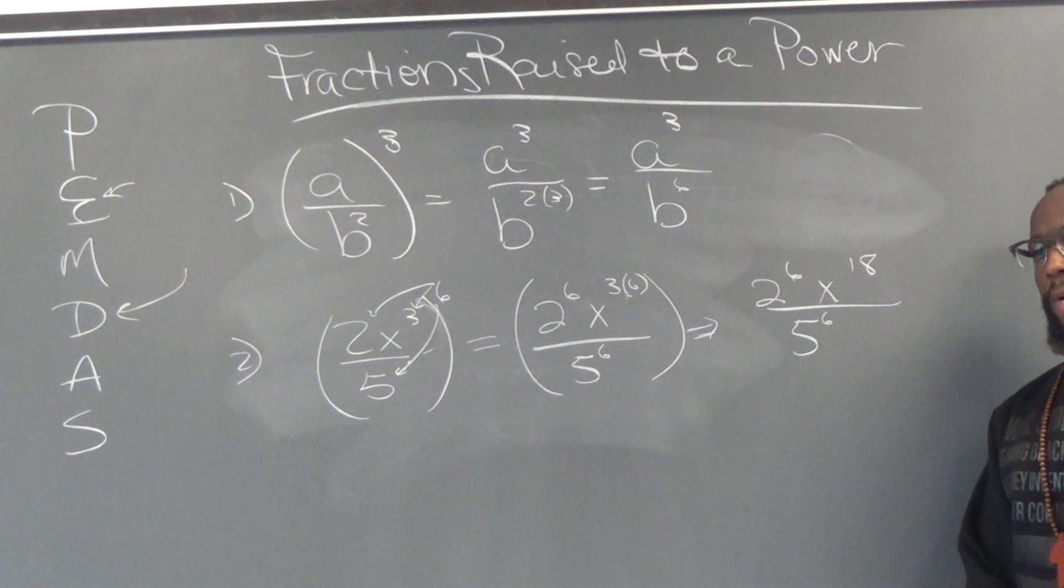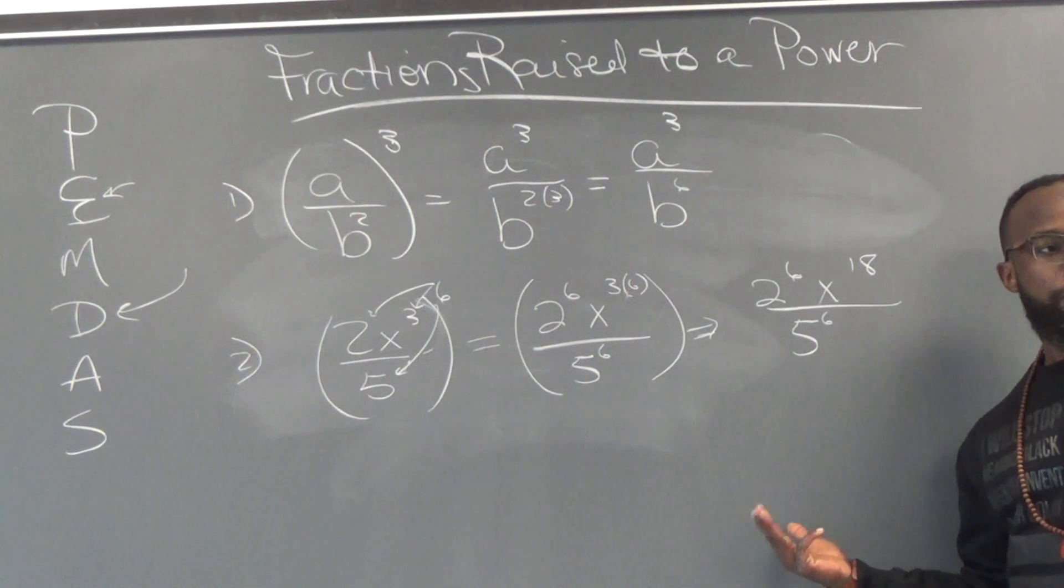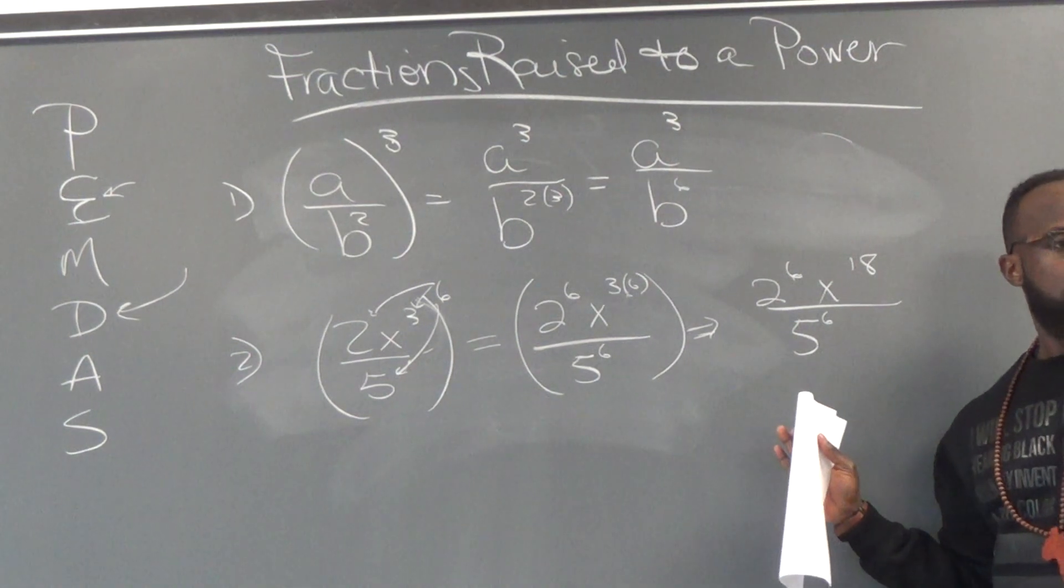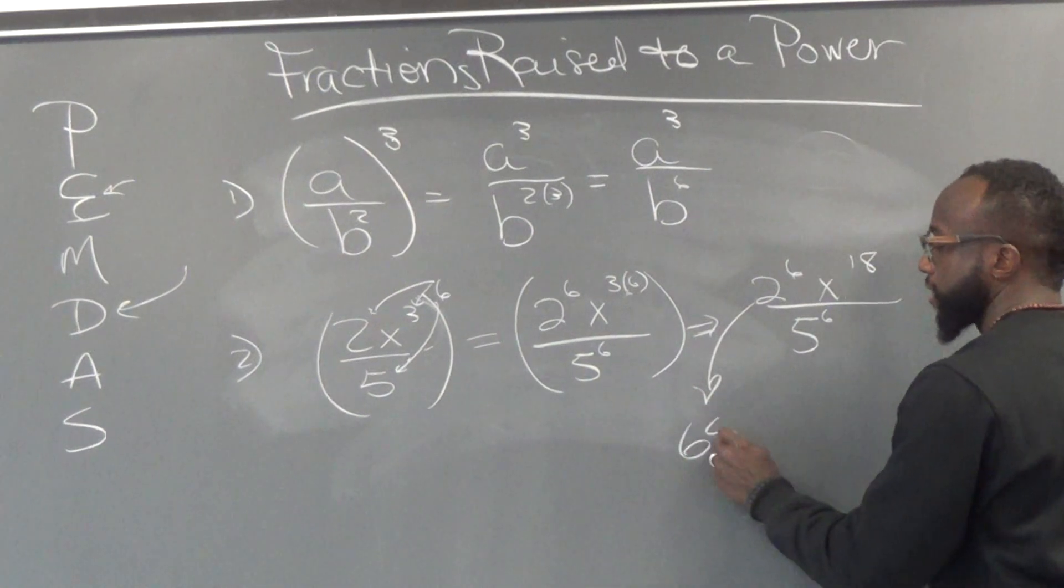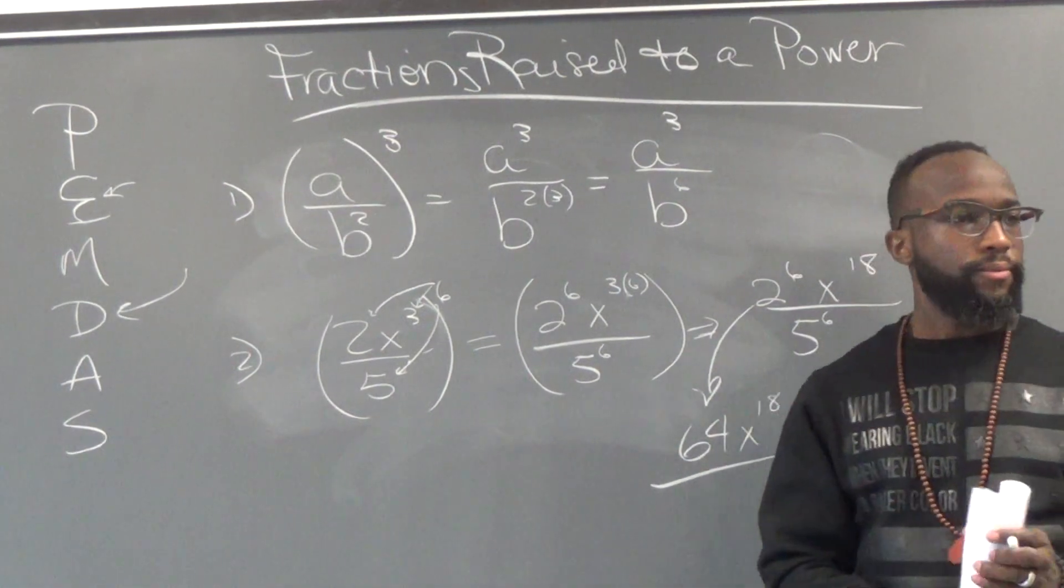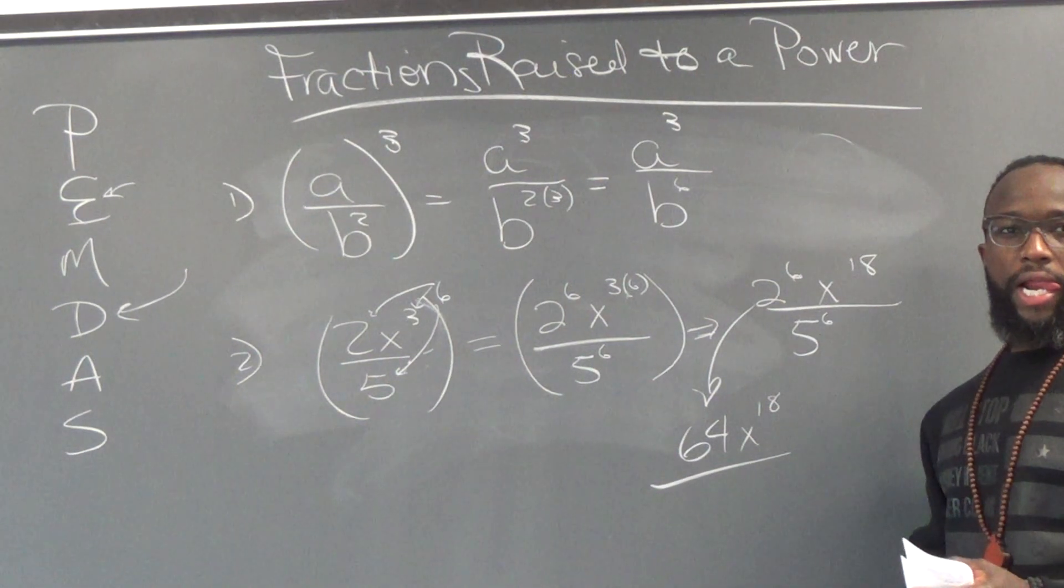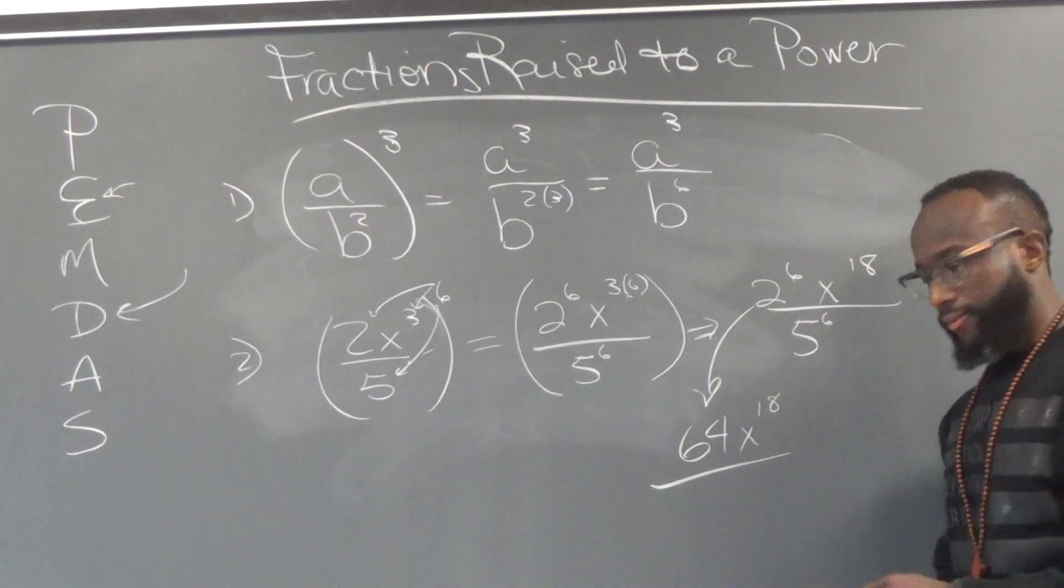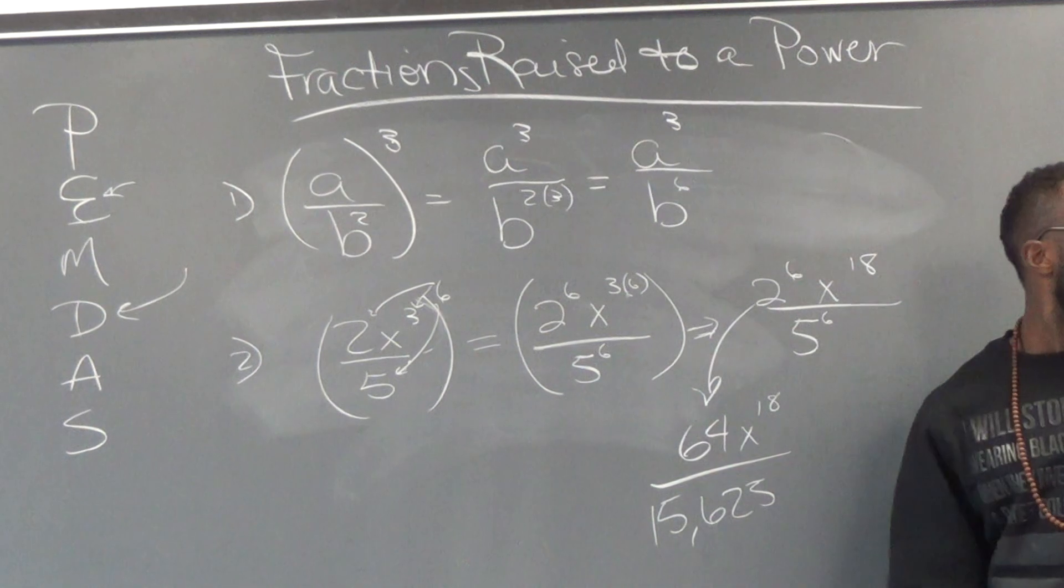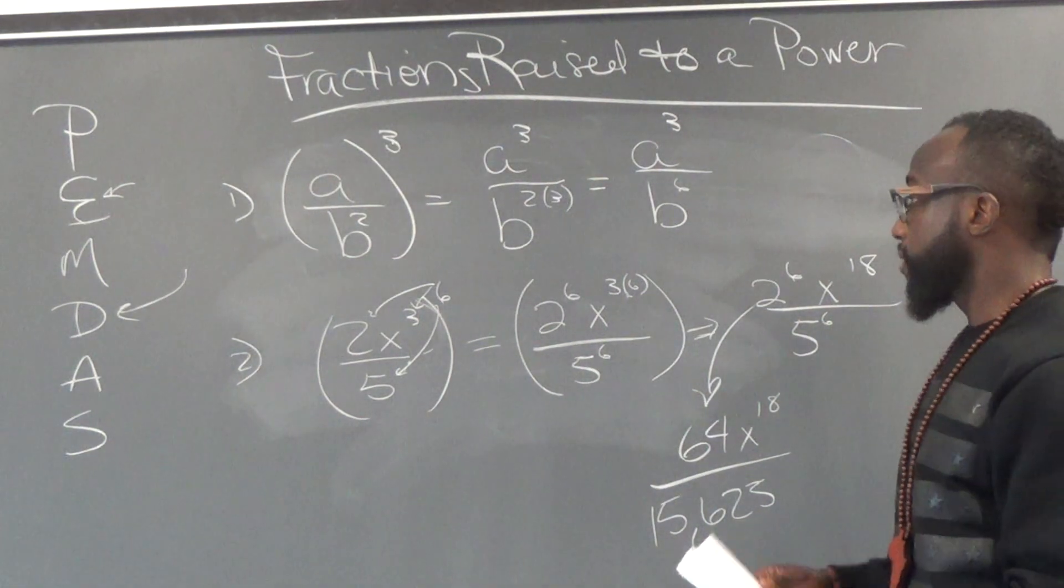Let's do it. We can do it. 2 to the sixth power, that's 2 times 2, 4 times 2, 8 times 2, 32 times 2, 64. So this one's 64. So you got 64 x to the 18th power. Now 5 to the sixth power, we need to calculate that. It's like 25 times 25 times 25. So that's it. Make sure you got this written down. So that's pretty much it.